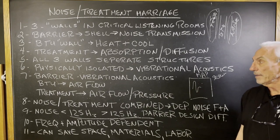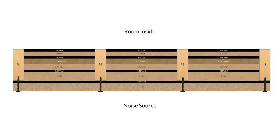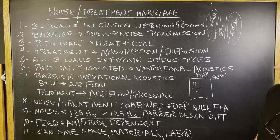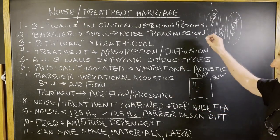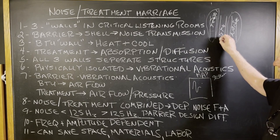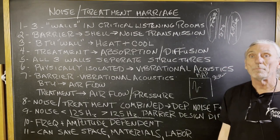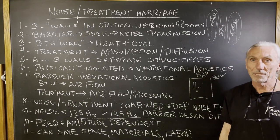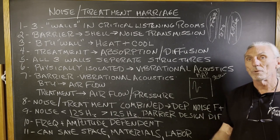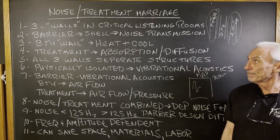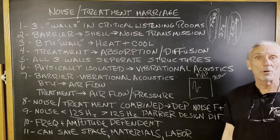Here's a graphic of three stud spaces with our CAW system and a barrier installed on the outside — that'll give you an idea of how all that works. Noise treatment walls can be married together, depending on frequency and amplitude. But we have to understand that they're better with separate structures, allowing each one to perform at its maximum. Noise treatment marriage — hope this helps.